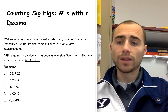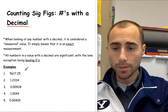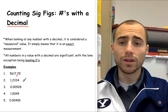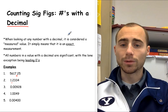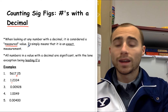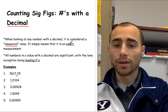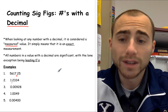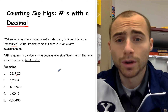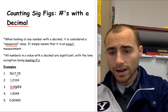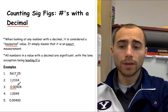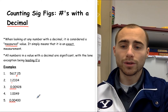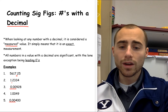Starting with counting significant figures in numbers with a decimal — you can see all these examples down here all have a decimal. When looking at any number with a decimal, it is considered a measured value, meaning it's an exact measurement. All numbers in a value with a decimal are significant except for leading zeros. A leading zero is any zero that comes before an actual integer — any zero that comes before an actual number.